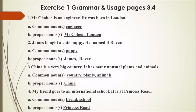Number 1: 'Mr. Cohen is an engineer. He was born in London.' Common noun: engineer. Proper nouns: Mr. Cohen, London.